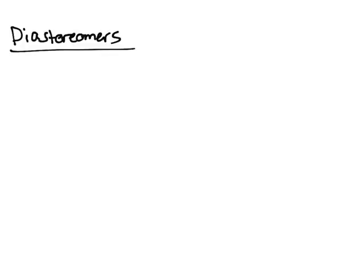So, in previous videos, we pretty much only talked about enantiomers, which is a mirror image of something. Well, there's an instance where something can be a stereoisomer, but not a mirror image. So, those are diastereomers.